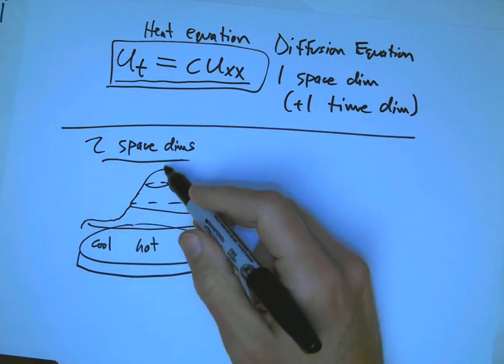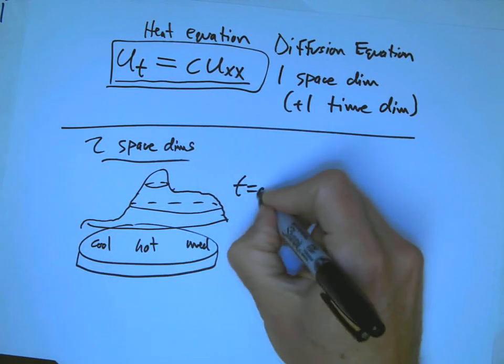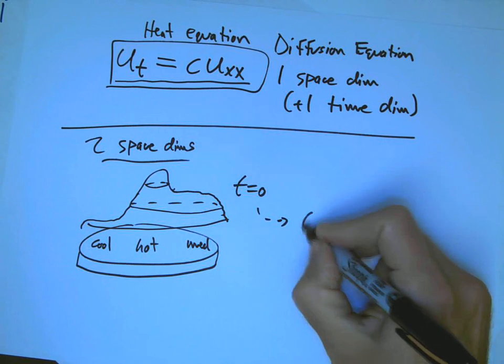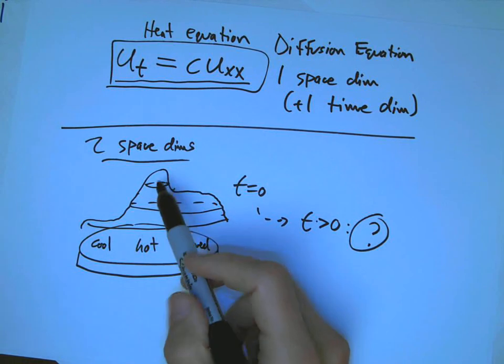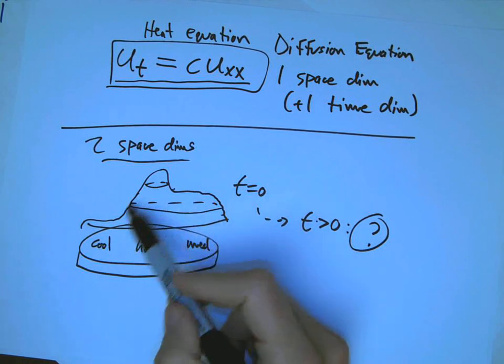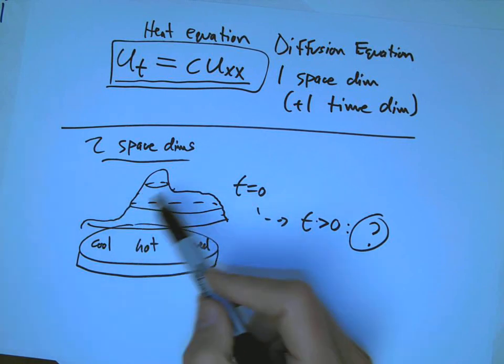We want to know if that's the t equals zero snapshot, what happens at t greater than zero? We'd expect this hot spot to cool down and the cool spot to get a little warmer as that heat flows into it.